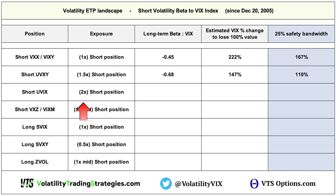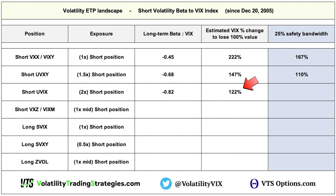Moving on to extremely aggressive short volatility traders: what if you were short the UVIX? Given that it's 2 times leveraged and has a beta of minus 0.82, long term it's only a 122% VIX spike to crush that position, or 91% using our safety range. People who are short the UVIX are definitely going to feel nervous, and they should.